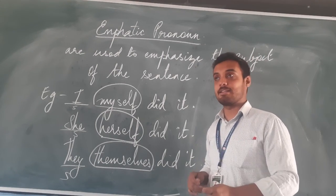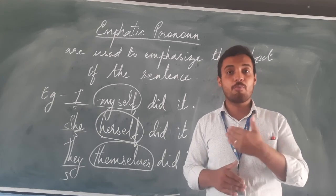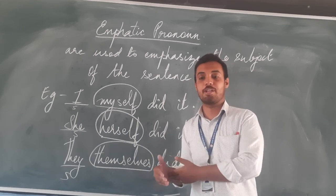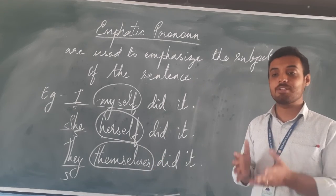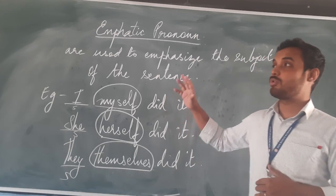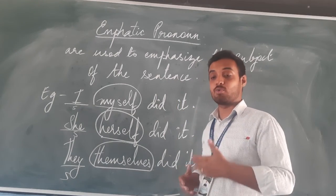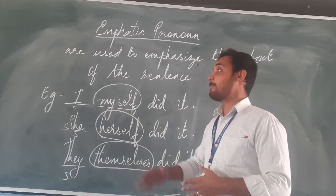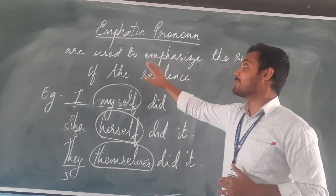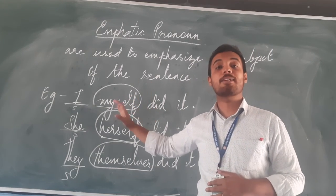If we are writing any sentence, a sentence has a subject and a predicate. If we go much deeper, a sentence has a subject, helping verb, verb, and object. But since we are talking about pronouns, we need to know the different types and how they are used. So, emphatic pronoun is a type used to emphasize the subject of the sentence.